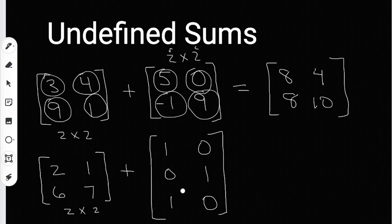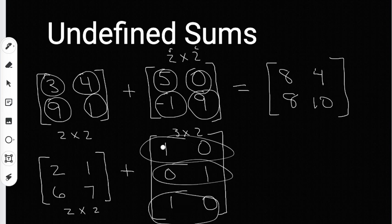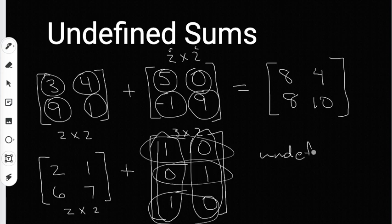But over here, we don't have a two by two. We actually have a three by two. How do I know it's a three by two? Because it has three rows—one, two, three—and it only has two columns here and here. So I can't add a two by two to a three by two. This would be an undefined sum.